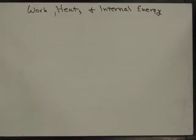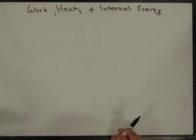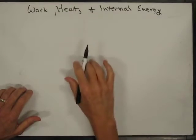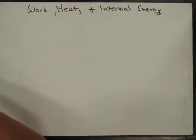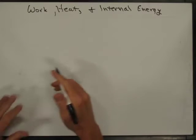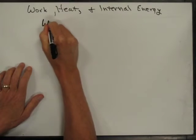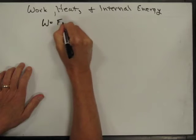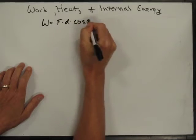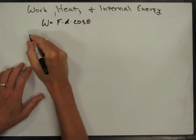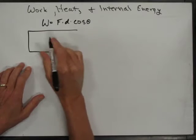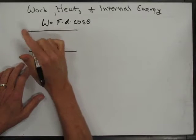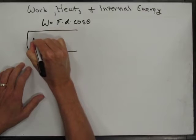In this section we're going to look at the work done on or by a gas, and eventually we'll start relating it to heat and internal energy. I'm going to start with just our definition of work. Work is equal to force times distance times the cosine of the angle between them. In the context of a gas, we're usually going to be thinking of it in terms of a cylinder. Let me draw it this way.